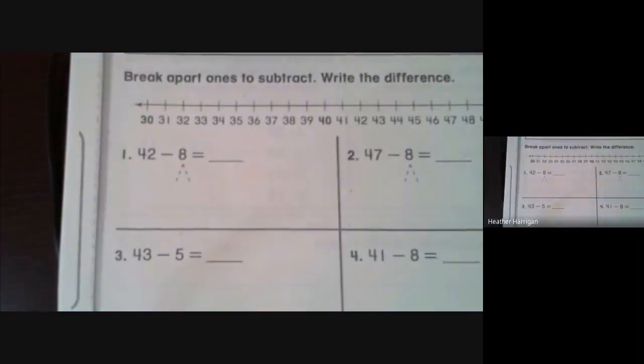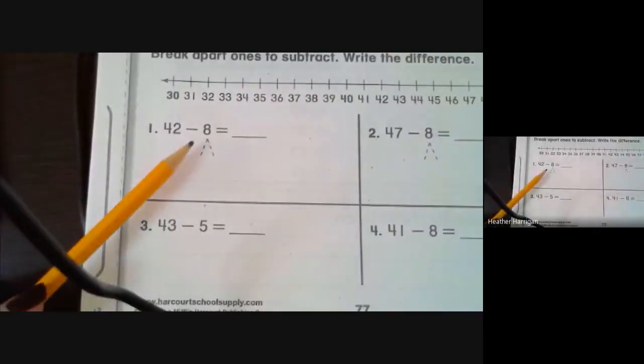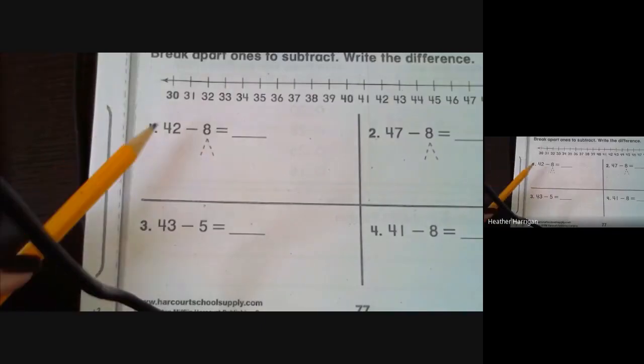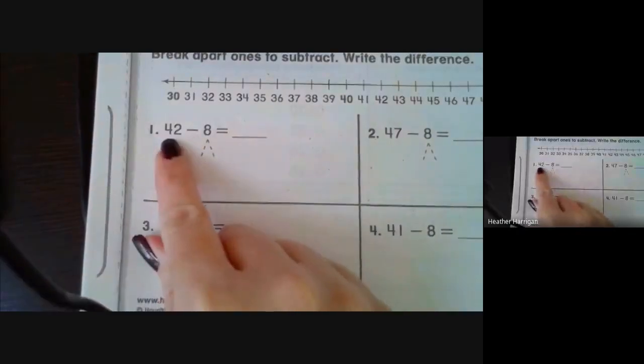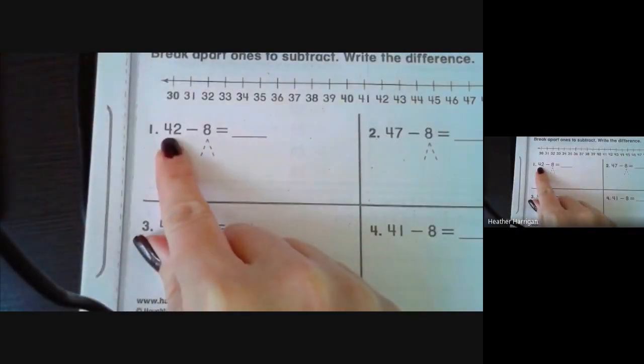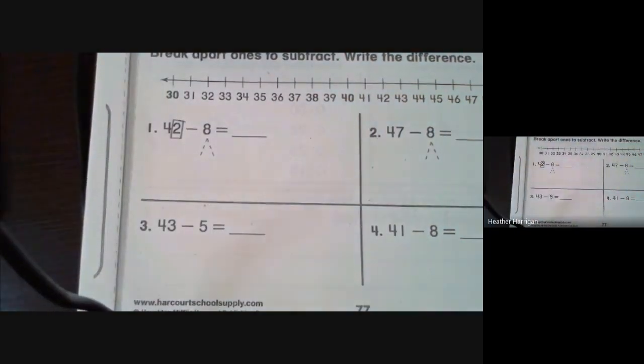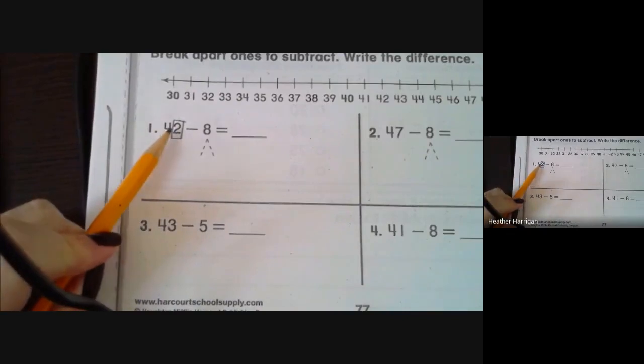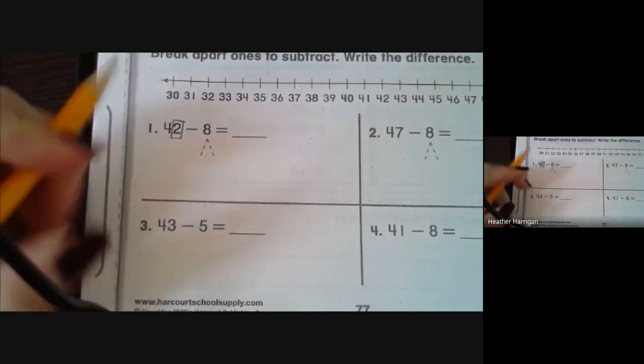We're going to move on to subtraction. This lesson sometimes confuses children, so we thought that it would be worthwhile to take a look. So what this lesson is, it's breaking apart ones to subtract. So what we want to do is go back to the base of we want this number to be a multiple of ten. So when we look at the number 42, we concentrate on the ones. We see that there are two ones. So we know if we took away these two ones, we would be at the number 40.